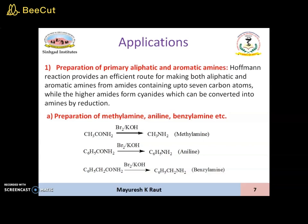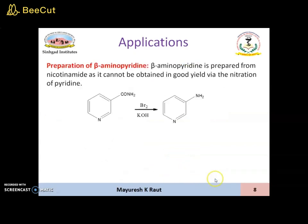Applications. Hoffman Rearrangement is used for preparation of primary aliphatic and aromatic amines. We can prepare different primary amines either aliphatic or aromatic using the Hoffman Rearrangement. The various reactions shown here include preparation of methylamine, aniline, and benzylamine. It is also used for preparation of beta-aminopyridine in good yields.